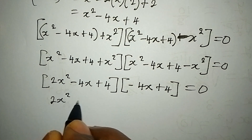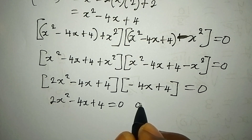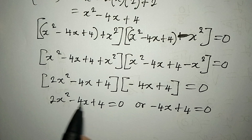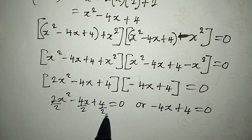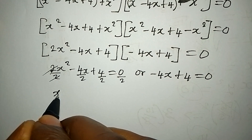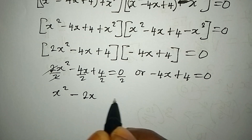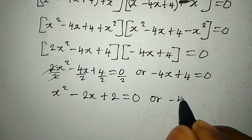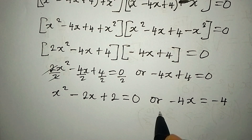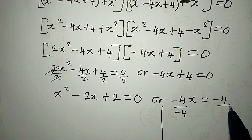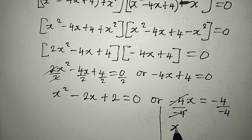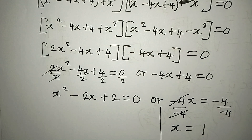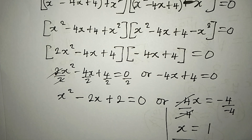Applying the zero product rule, it is either 2x² minus 4x plus 4 equals 0, or minus 4x plus 4 equals 0. For the linear equation, dividing by minus 4 gives x equals minus 4 over negative 4, which is 1. So x₁ equals 1. Now let's get the other values.